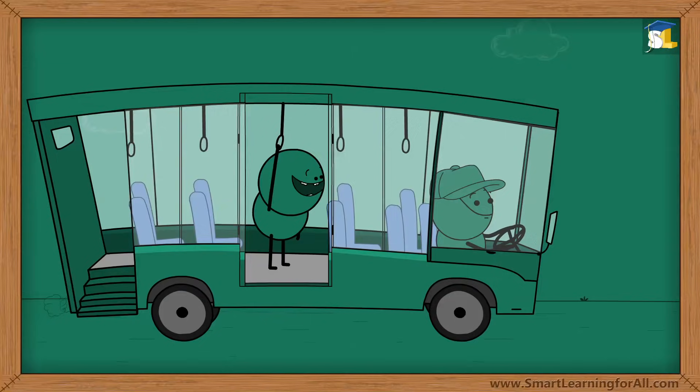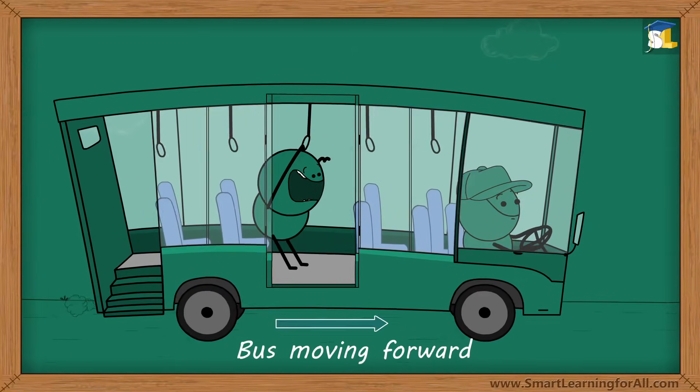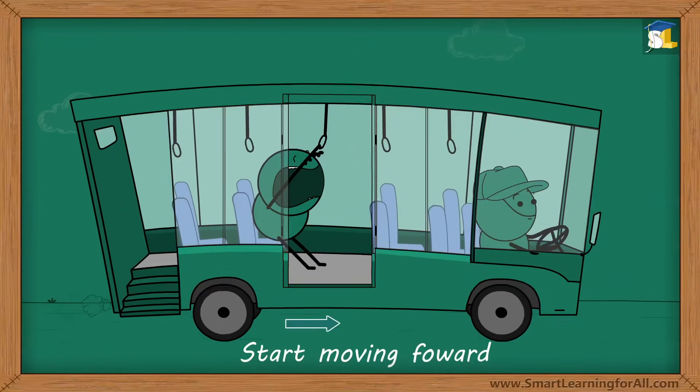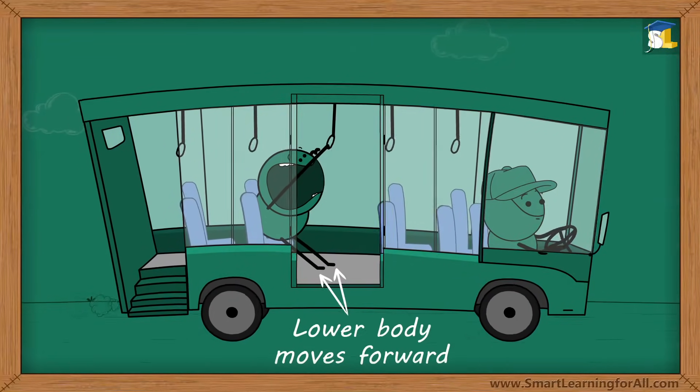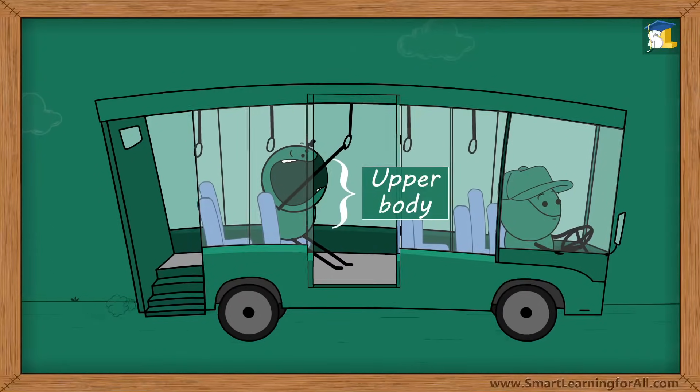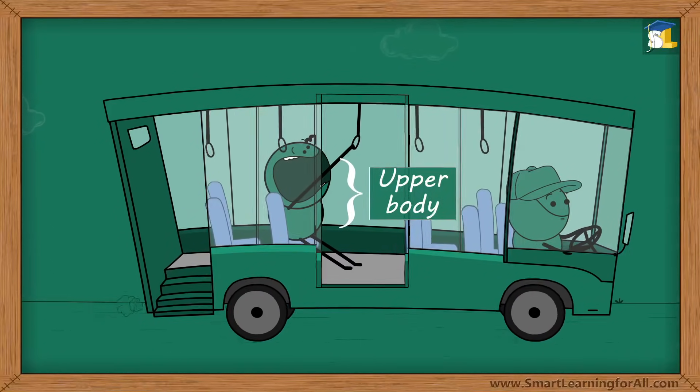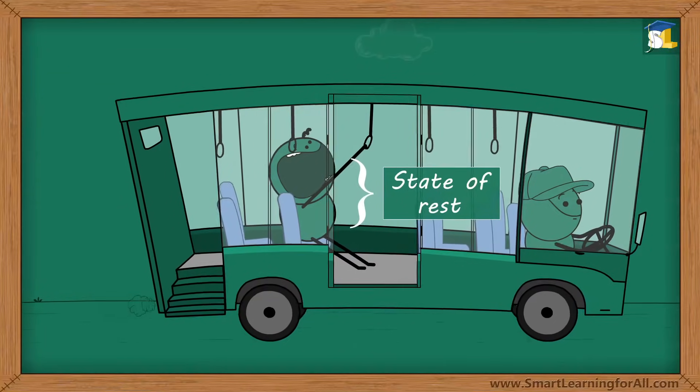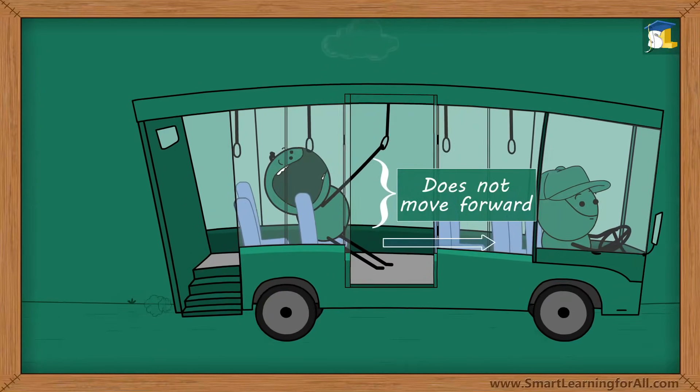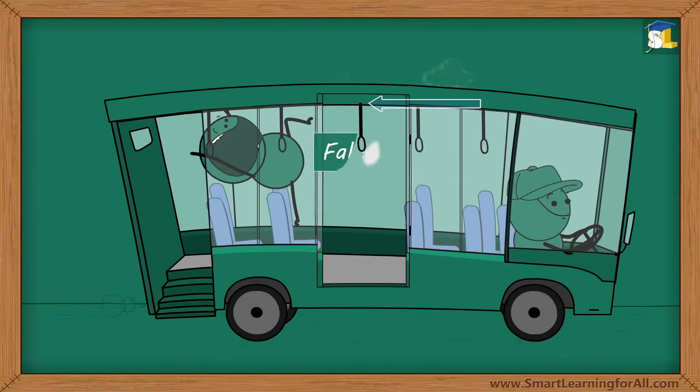When the bus suddenly starts moving forward, our feet, which are in contact with the bus, start moving forward. As a result, the lower part of our body moves forward. But the upper part of our body, which is not in contact with the bus, still tends to remain in a state of rest. That is, the upper part of the body does not move forward along the lower part. That is why we tend to fall backwards.